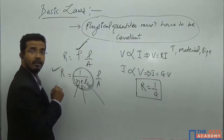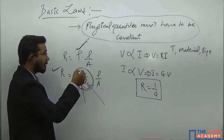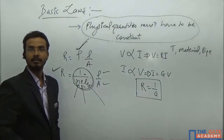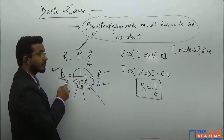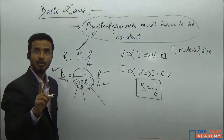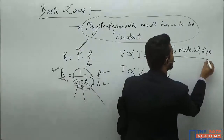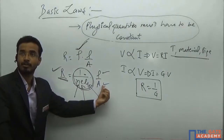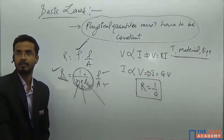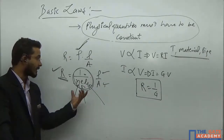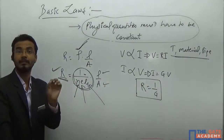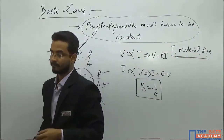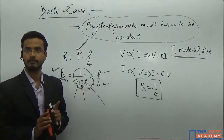Resistance depends on both the material (rho) and the size (L and A). So whenever you say that R should be constant, that means L and A should also be constant. That is why this condition is important — the material should not change, and L and A should also not change. Conductivity can also change with temperature, so the restriction is placed on temperature, material, and size. So this is the first law: Ohm's law.